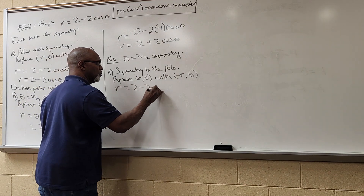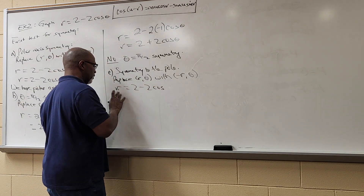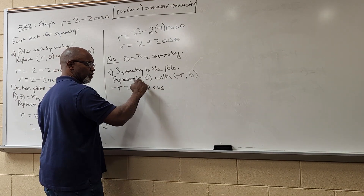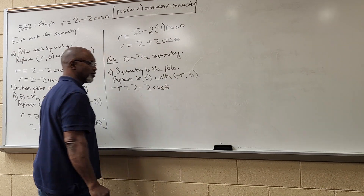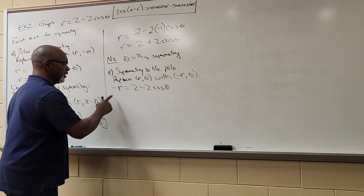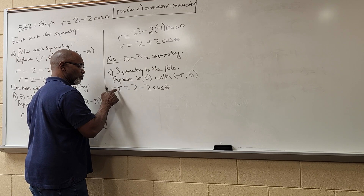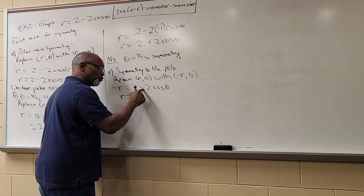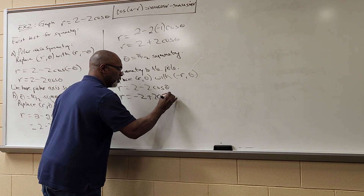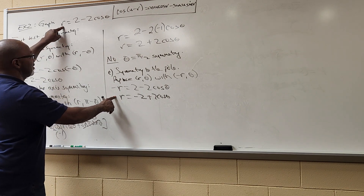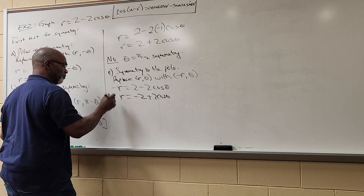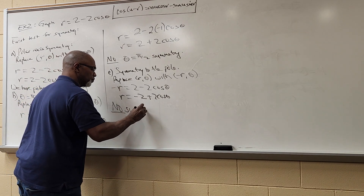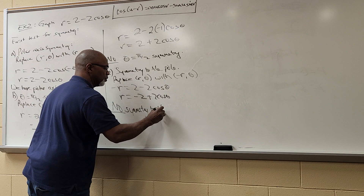For symmetry with respect to the pole, we replace (r, θ) with (-r, θ). So: -r = 2 - 2cos θ. Replacing r with -r is the only change. To get rid of the negative, multiply everything by -1: r = -2 + 2cos θ. Since this is not the same equation as r = 2 - 2cos θ, I do not have symmetry with respect to the pole.